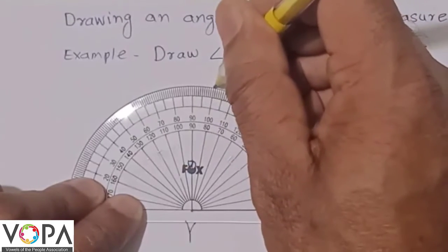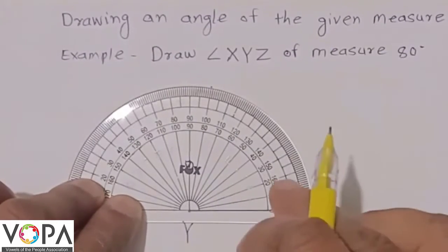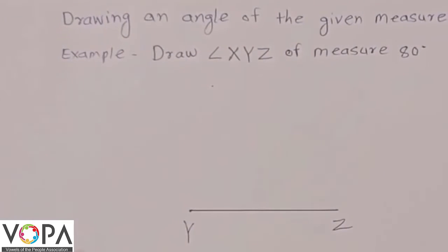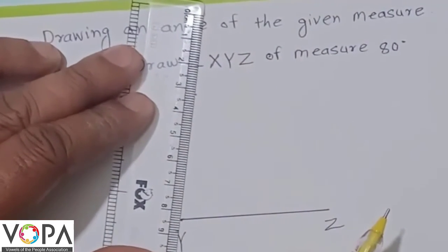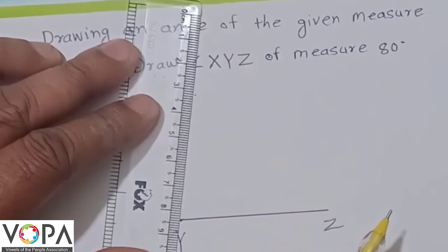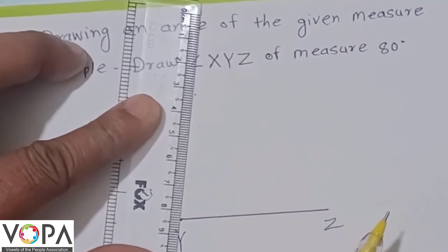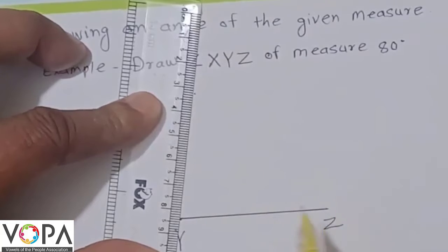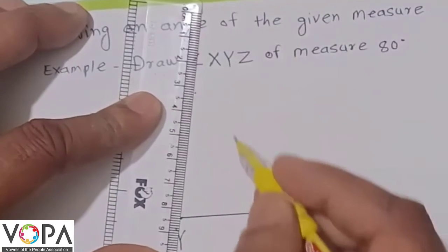Lift the protractor, then take a ruler and draw arm YX with the help of the ruler, going through the mark at 80 degrees.